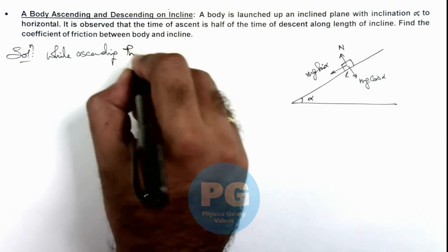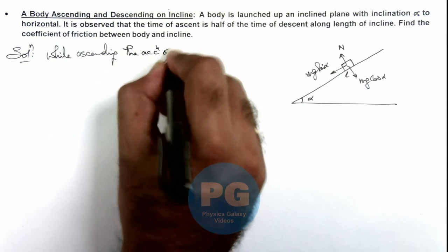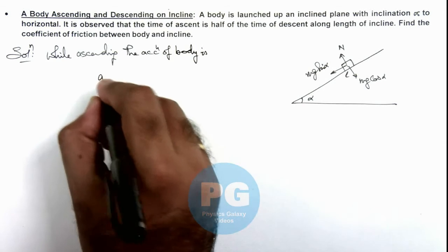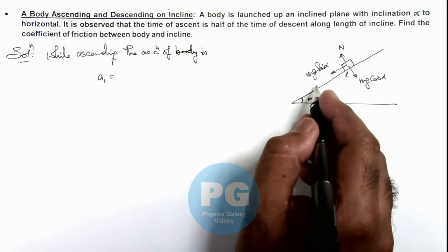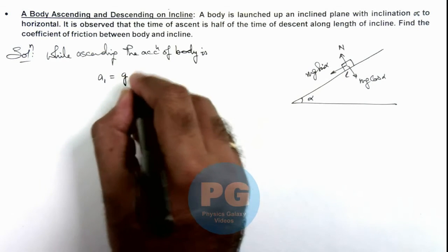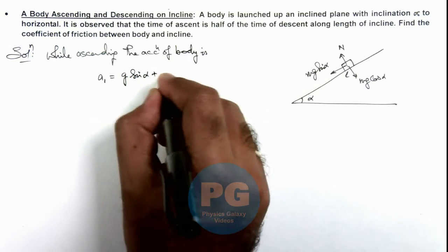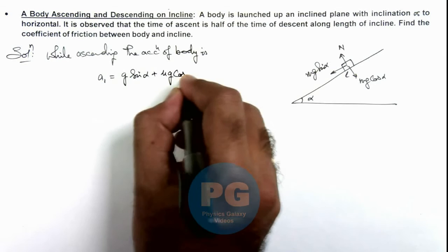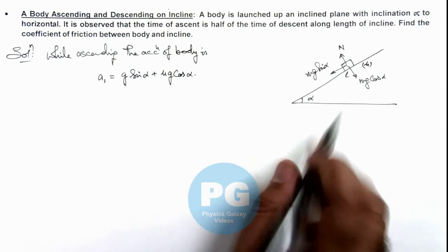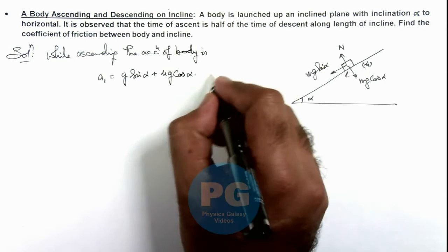The acceleration of body is—its acceleration can be written as a₁ and this is the total force divided by its mass. So it will be g sine alpha plus mu g cos alpha. We consider mu is the coefficient of friction between body and incline. Say this is our equation 1.